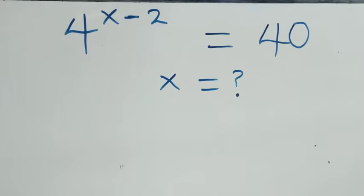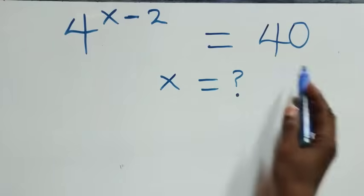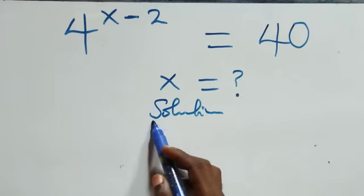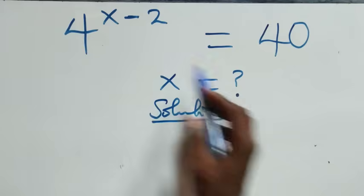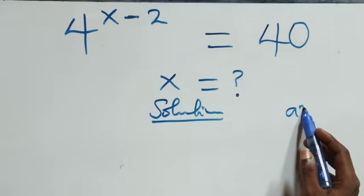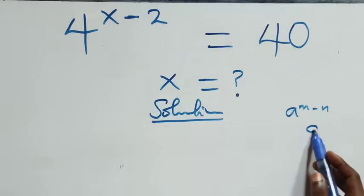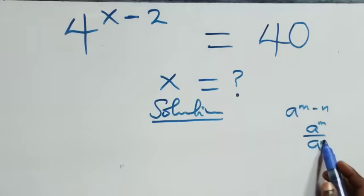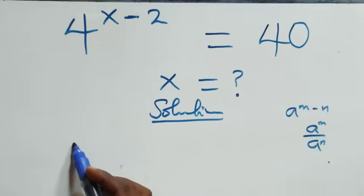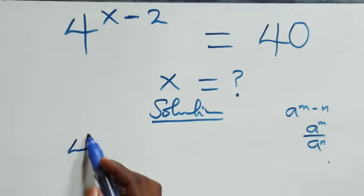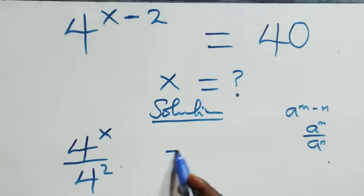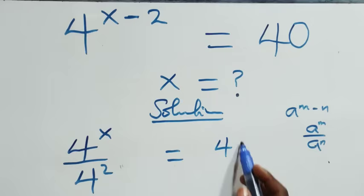How to solve this nice exponential equation. The solution starts from here. What we have is a raised to power n minus n, which is the same thing as a raised to power n over a raised to power n. Here we have 4 raised to power x over 4 squared equals 40.